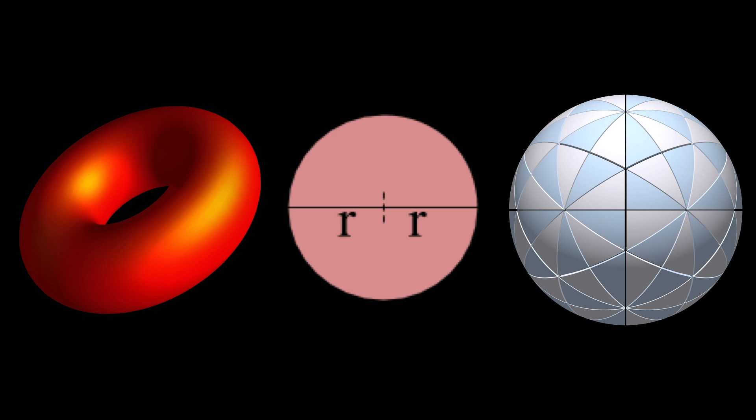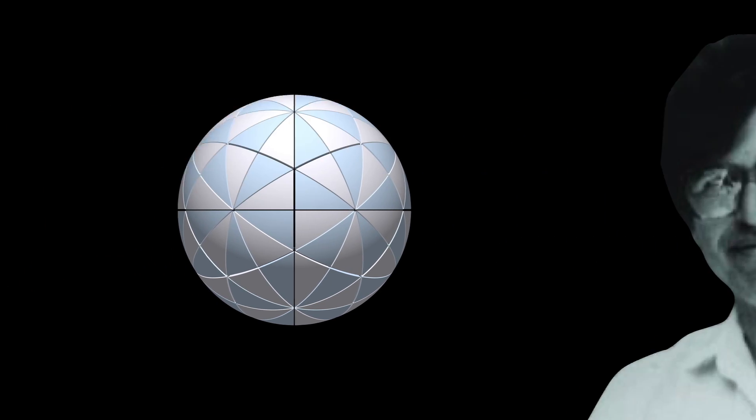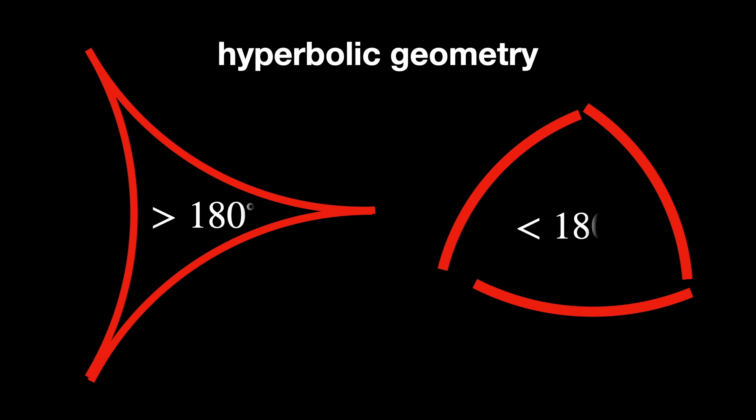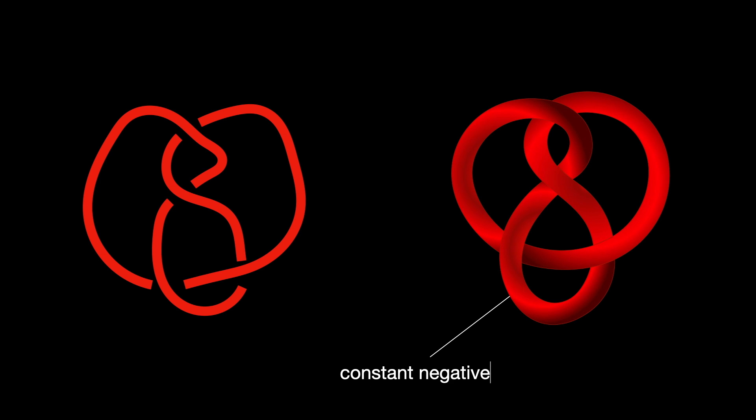Yes, a great example of that is hyperbolic knot theory. It's a field that combines elements of topology, geometry, and group theory, largely credited to the work of William Thurston in the 1970s and 1980s. Before Thurston's work, knot theory primarily involved studying knots and links in Euclidean space. However, Thurston introduced the idea that most knots and manifolds could be understood through hyperbolic geometry. A knot is called hyperbolic if the space around the knot admits a hyperbolic geometry. This means that this space can be equipped with a metric of constant negative curvature, turning it into a hyperbolic manifold.